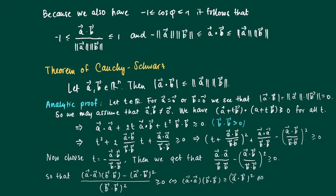Recalling that the inner product of a with itself is the length of a squared, and the inner product of b with b is the length of b squared, we have the length of a squared times the length of b squared is at least the inner product of a with b squared. Taking square roots on both sides, and recalling that the norms are positive, we get the length of a times the length of b is at least the absolute value of the inner product of a and b. This completes the analytic proof of the Cauchy-Schwarz theorem in general space Rn.